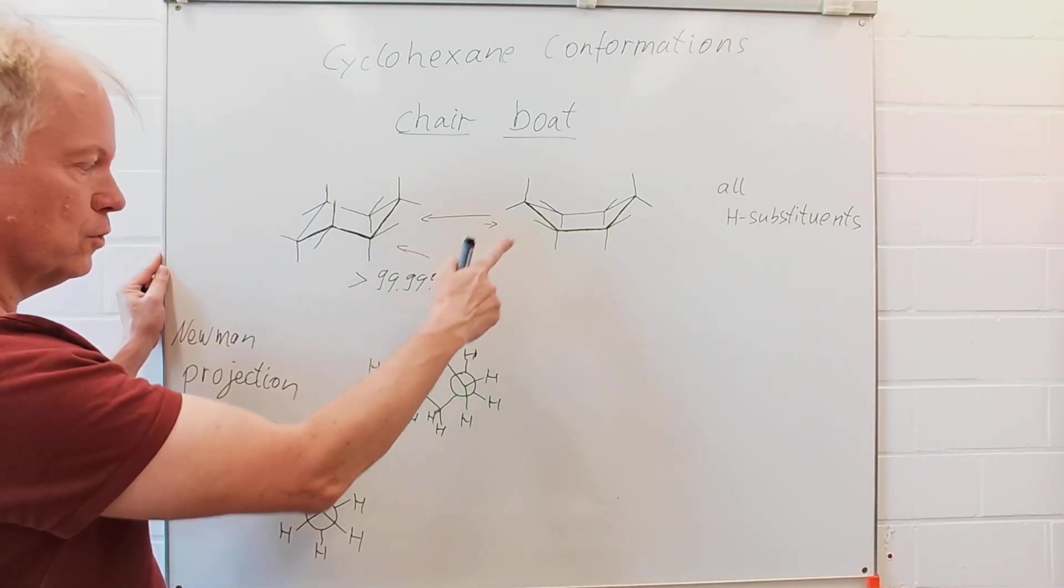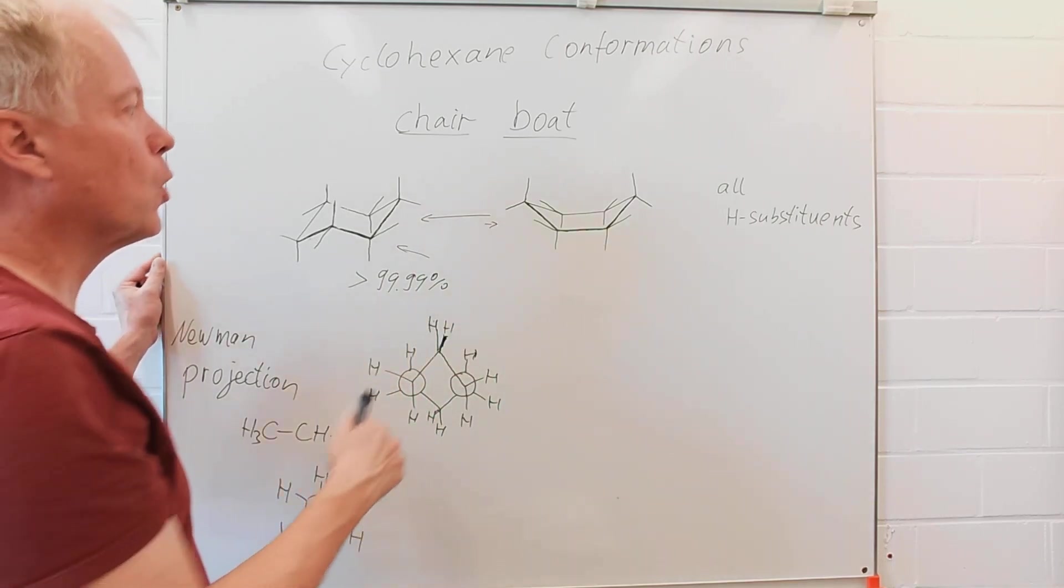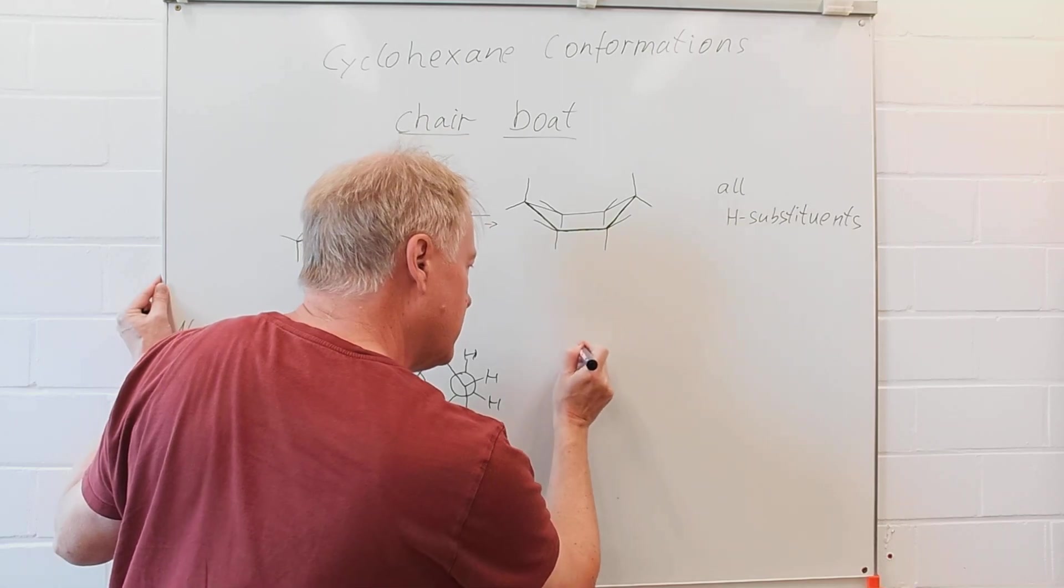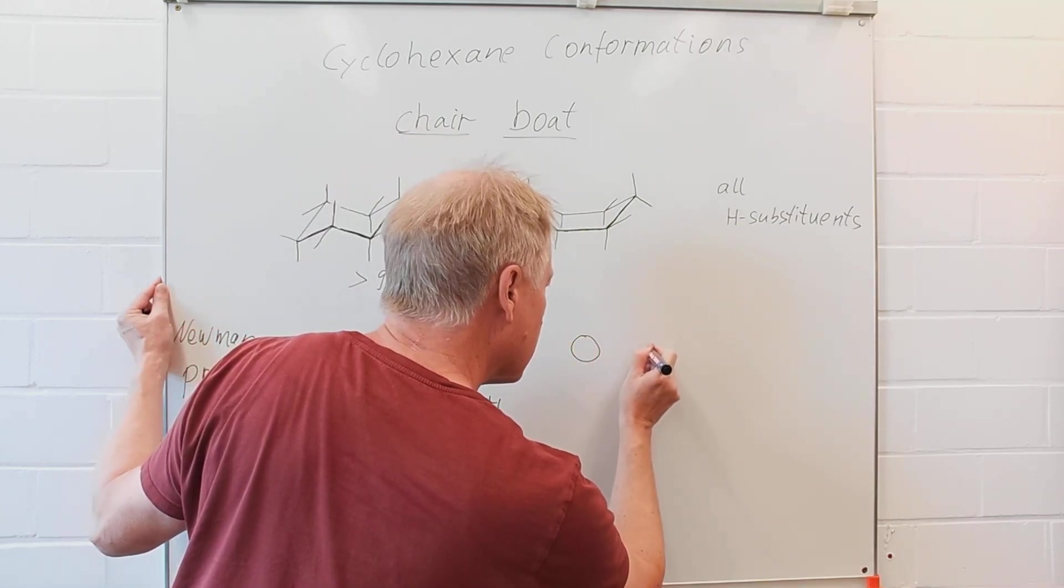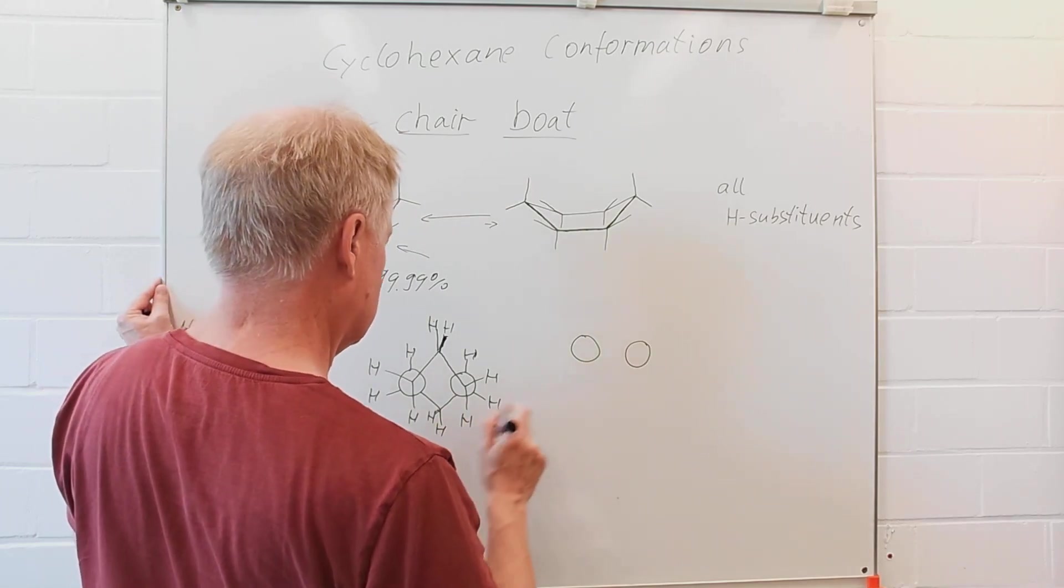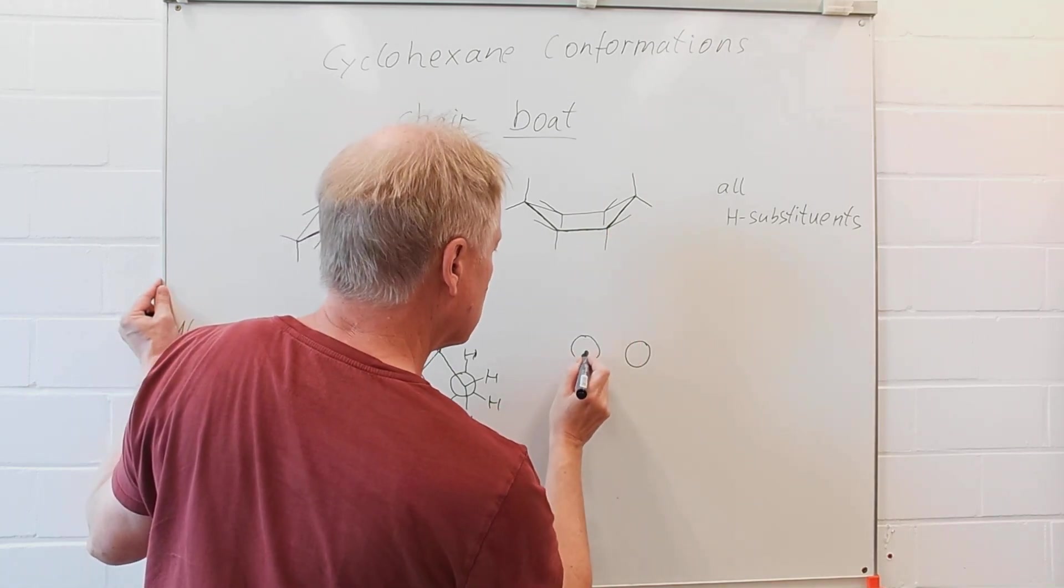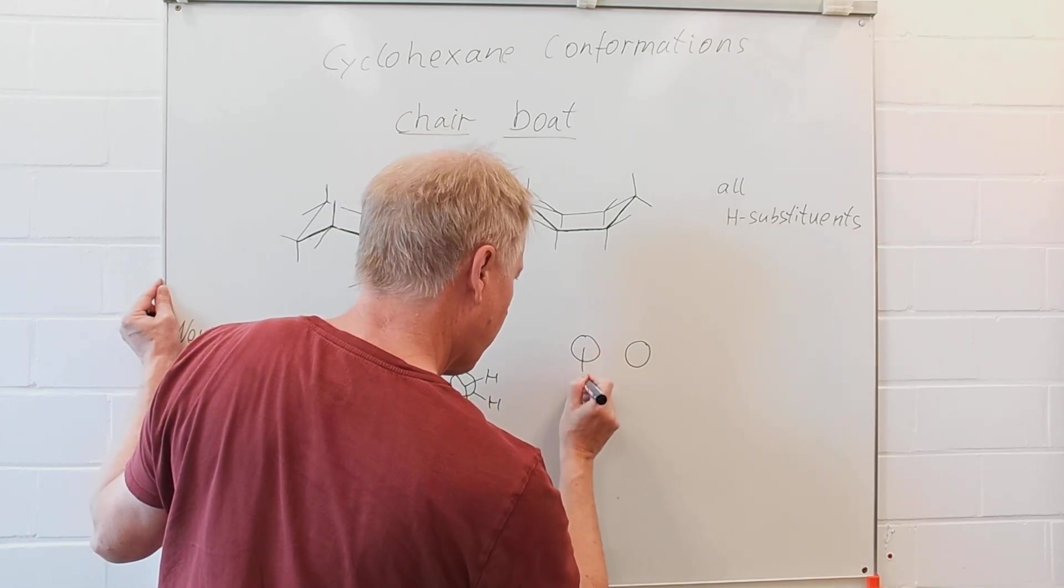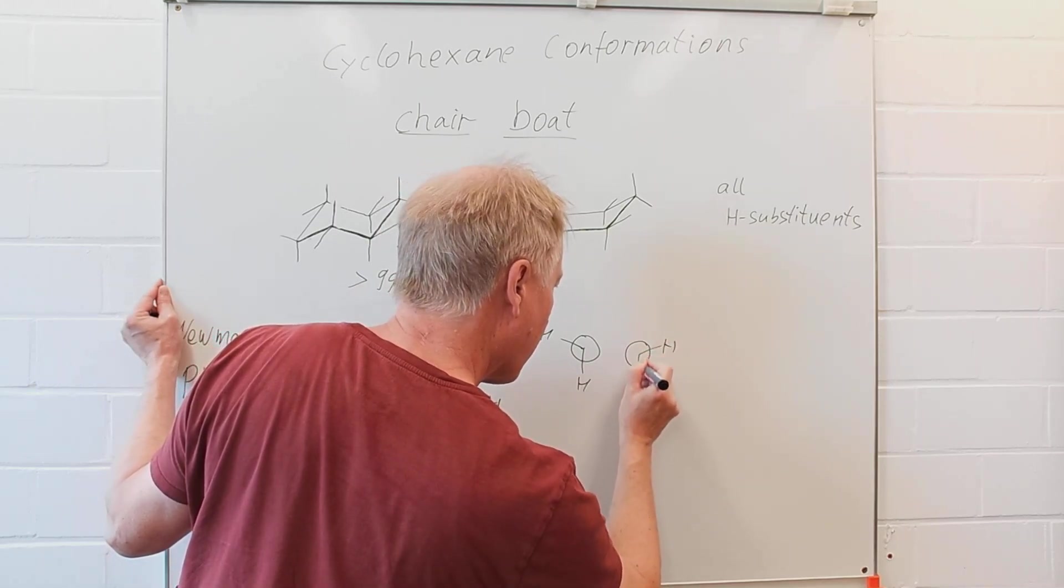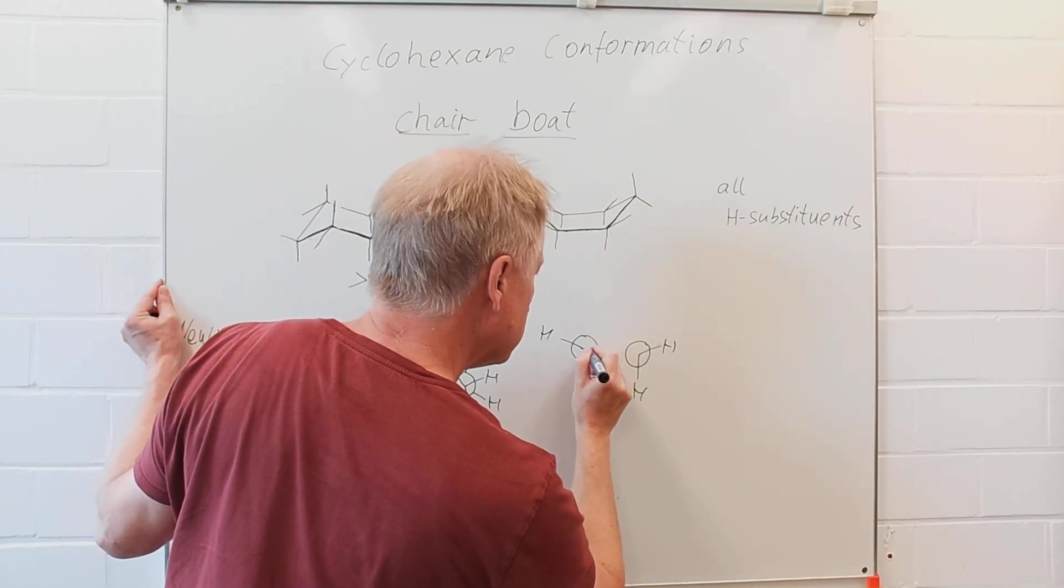So, now let's have a look how would this kind of drawing look like for the boat conformation. So, again the two carbon atoms in front, then axial and equatorial hydrogens. Here we have the methylene bridge.